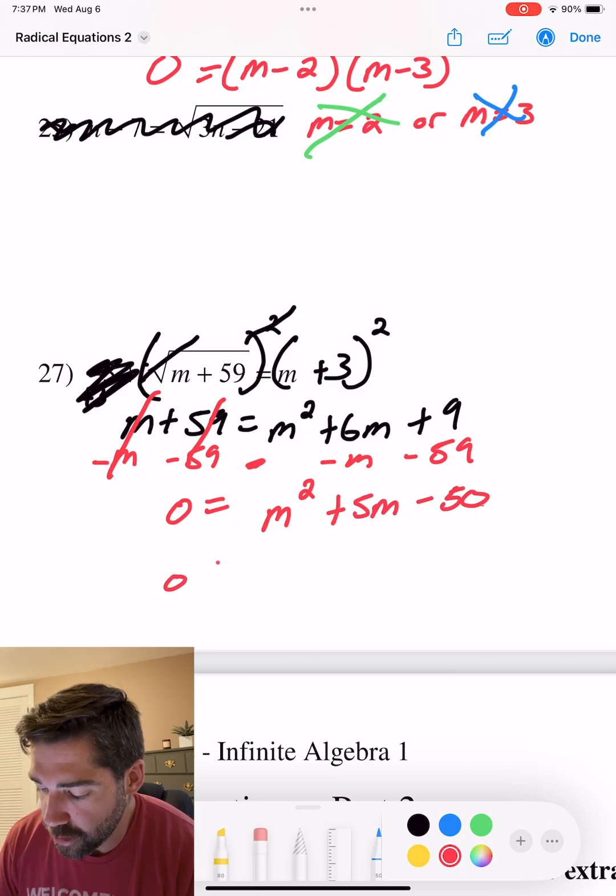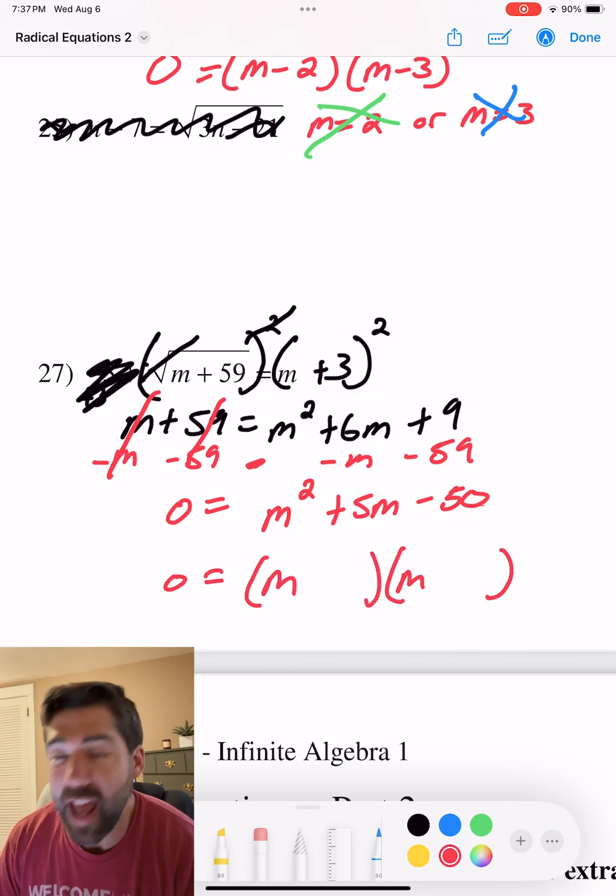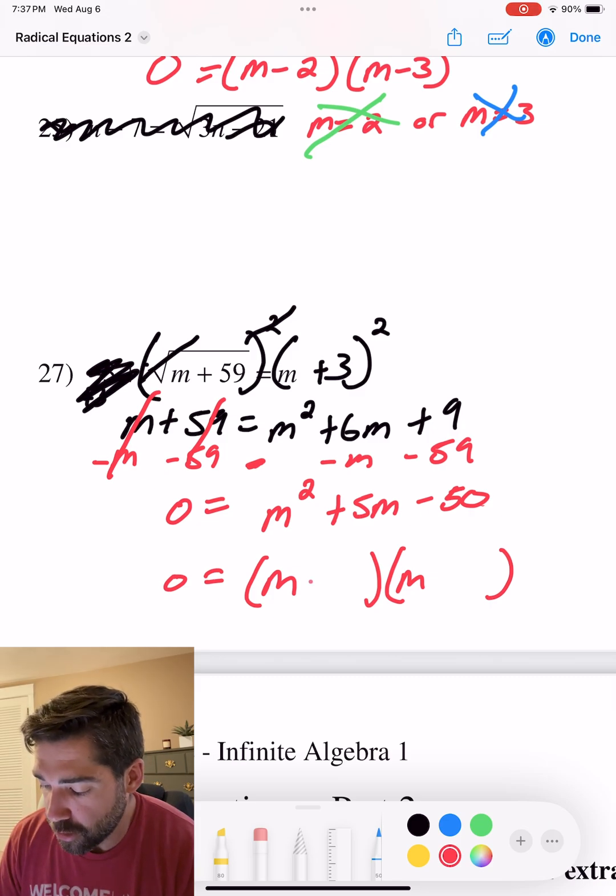So our factors have to multiply to be negative 50, but add up, combine, to be positive 5. So that means the bigger one is going to be positive. So that's positive 10 and negative 5.